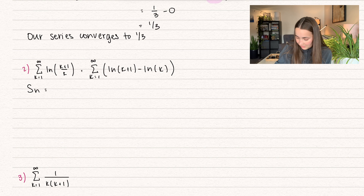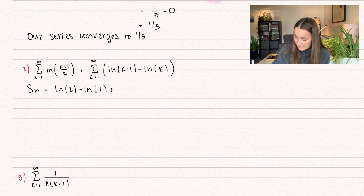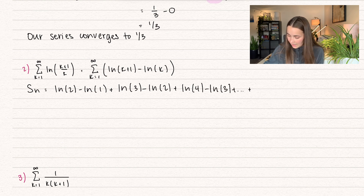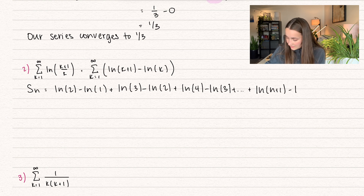Let's take a partial sum. This is going to equal: natural log of 2 minus natural log of 1, plus natural log of 3 minus natural log of 2, plus natural log of 4 minus natural log of 3, and we'll go all the way down to n: natural log of n plus 1 minus natural log of n.